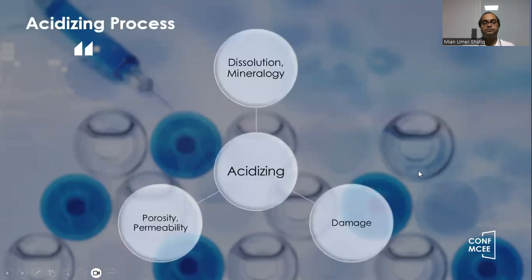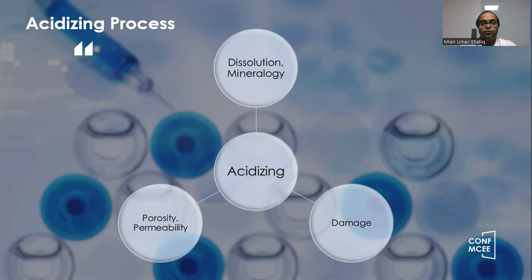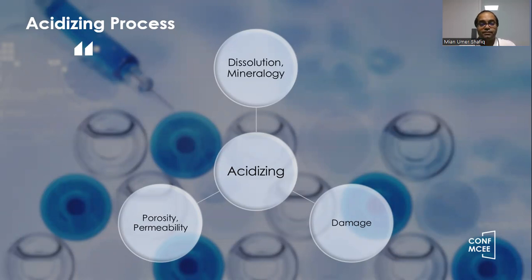Hydrocarbon well acidizing is the process to dissolve the damage which is present around the wellbore. The wellbore is basically the area around the well of a hydrocarbon oil and gas well. We inject acid inside to remove the minerals, particles, or damage present around the wellbore. Thus we increase the porosity and permeability of the rock sample, since oil and gas are present inside the empty spaces inside the rock sample. Increasing the porosity and permeability will increase the quality of the reservoir around the wellbore.